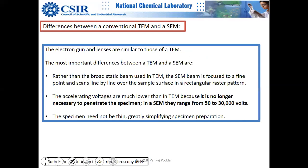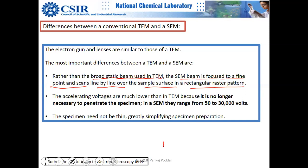The basic differences between conventional TEM and SEM: rather than the broad and static beam used in TEM, the SEM beam is focused to a fine point and scans line by line over the sample surface in a rectangular raster pattern. In standard TEM, electrons need to transmit through the sample, and transmitted electrons are collected for bright field, dark field, or X-ray analysis.